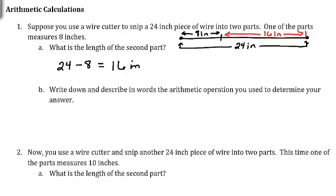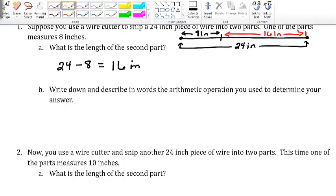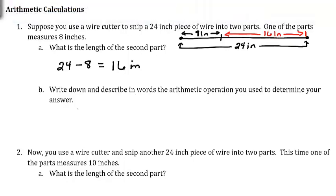Now write down and describe in words the arithmetic operation you used to determine your answer. The arithmetic that we did was we subtracted 8 from 24.